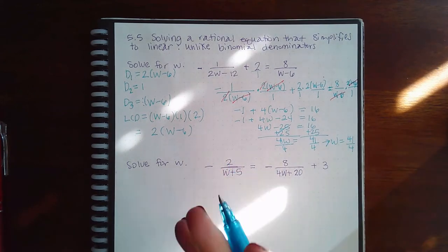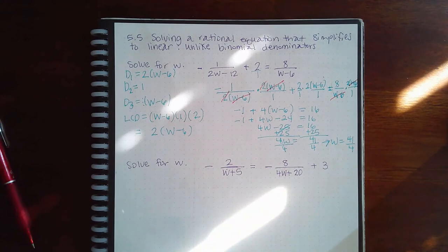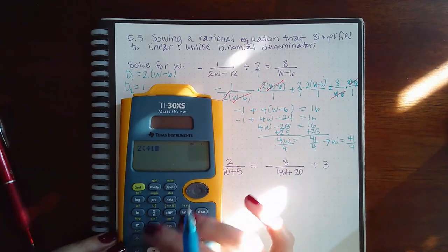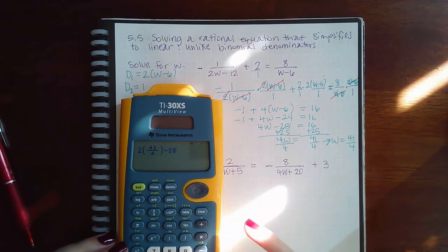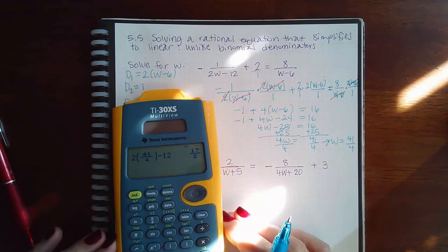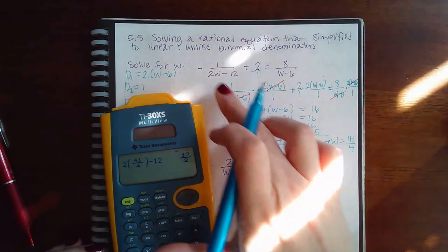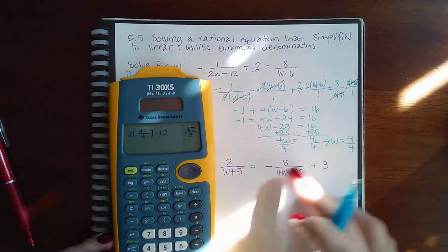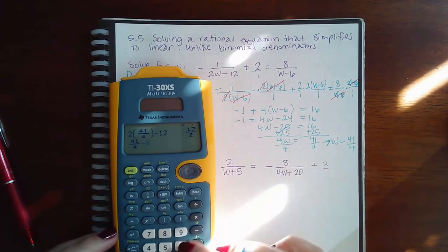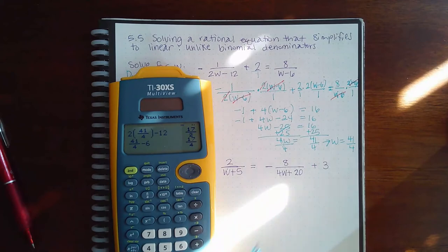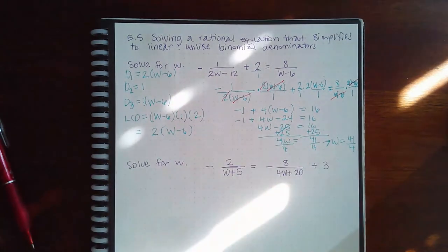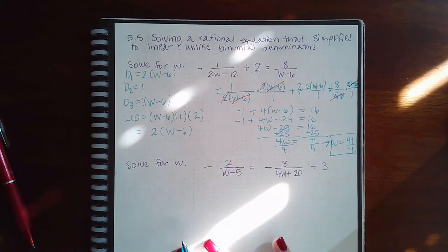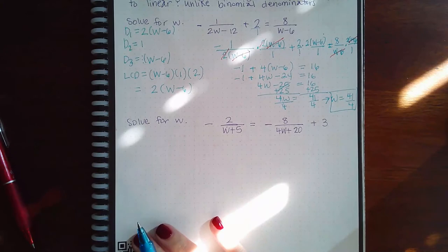So let's just make sure it won't make any of our denominators 0. So 2 times 41 over 4 minus 12 doesn't matter what number it is other than it's not 0. So it checks out in this one. 1 can never be 0, and 41 over 4 minus 6 is not 0. So as long as it doesn't make any of our denominators 0, this is the actual solution. Now let's try another one.